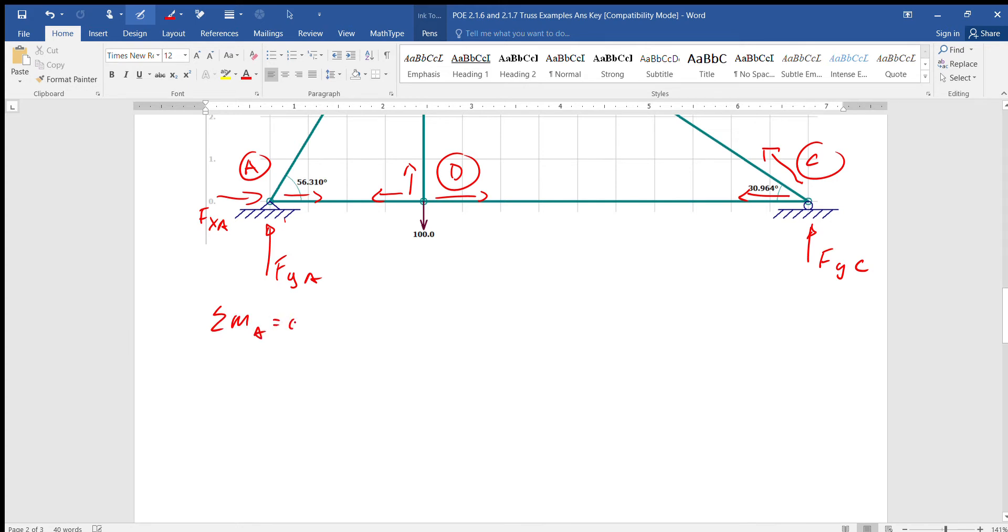So negative 100, because it's generating a negative moment, times 4 plus 14 times Fyc, which is creating a positive moment equals zero. So we find that Fyc equals 28.6 pounds.